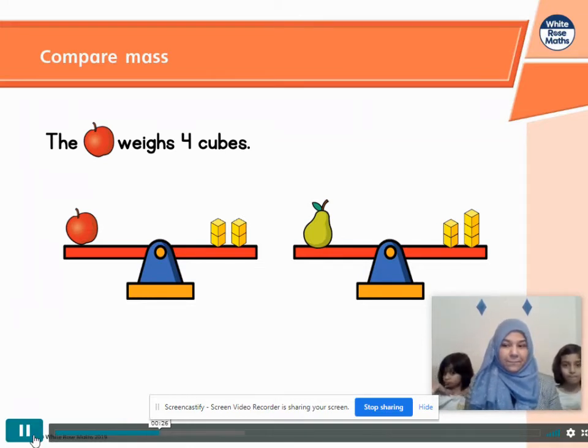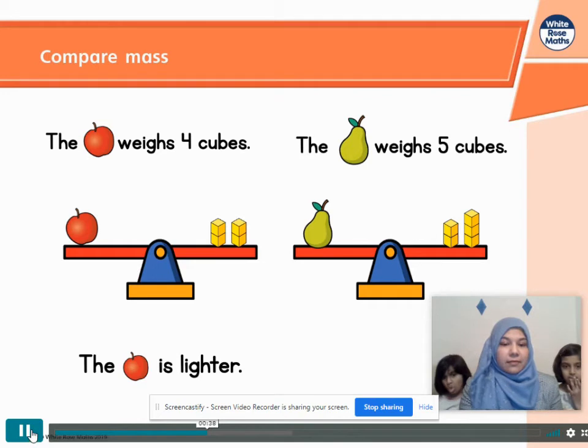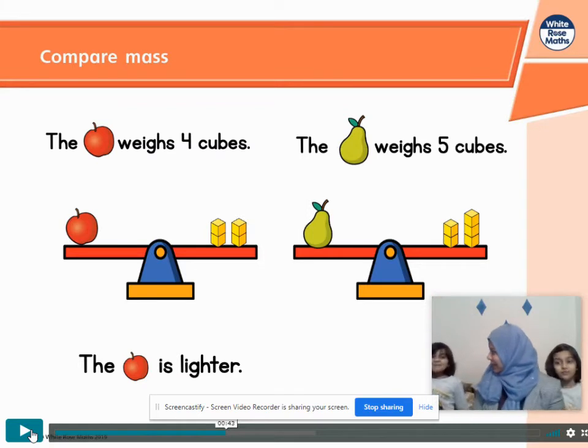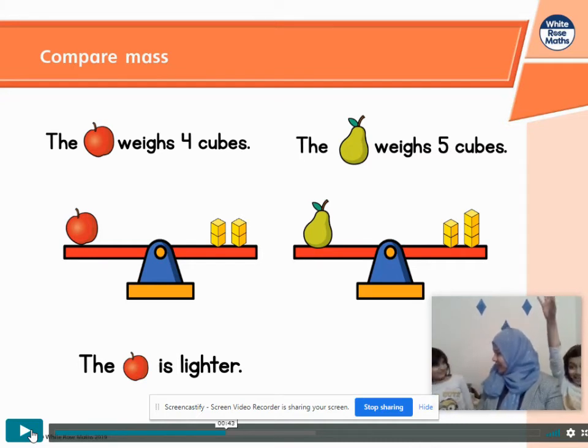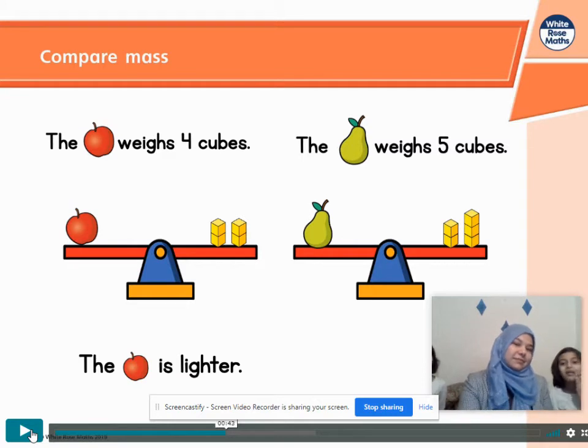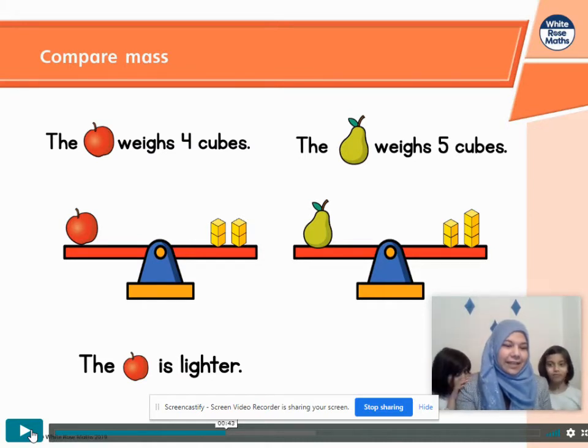And the pear? The pear weighs five cubes. What else can we tell? That's right. The apple must be lighter than the pear. Why is she saying that the apple is lighter than the pear? How does she know that? Because the pear has a leaf. Is the leaf making the pear heavier? Is that what you think? Okay, let's see what Shafia thinks. The apple is lighter than the pear because the pear has five cubes there and five cubes is heavier than four cubes. Oh, really good explanation Shafia, well done.